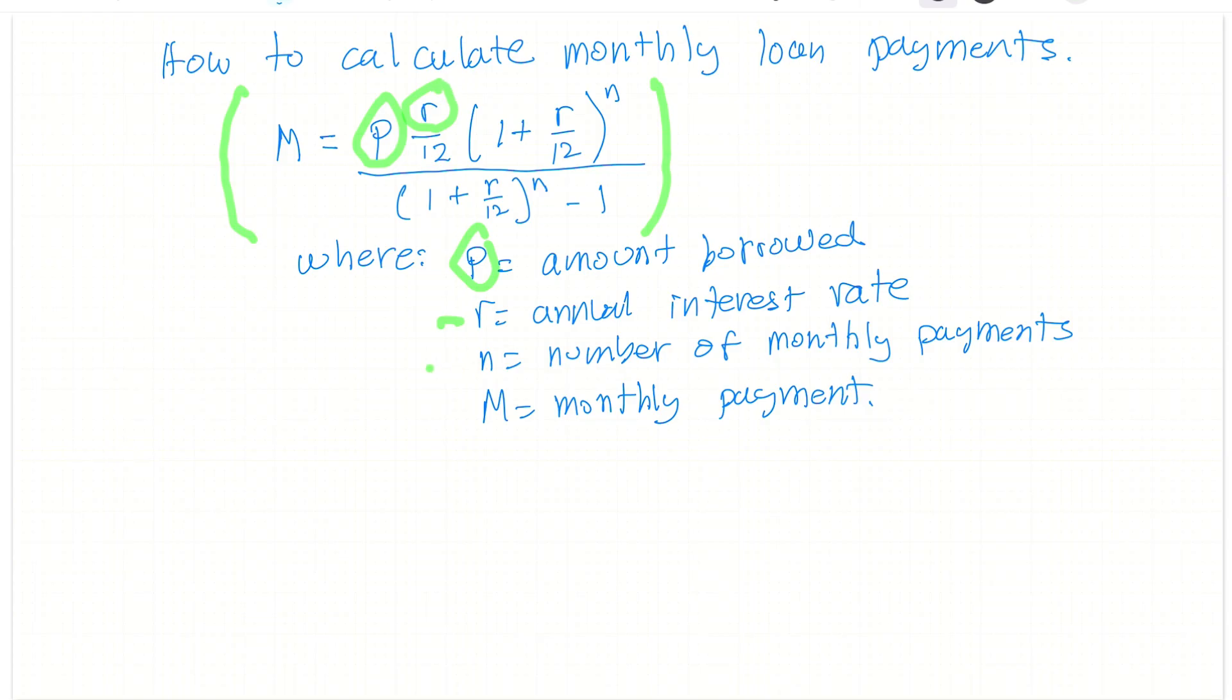And then we need to know the number of monthly payments. So how long is this loan - is this a 5 year, 10 year loan? That determines the number N, multiply by 12. And then finally this is our result out, which is going to be the monthly payments. This is how much we will actually have to give back to the bank or whoever we borrow the money from.